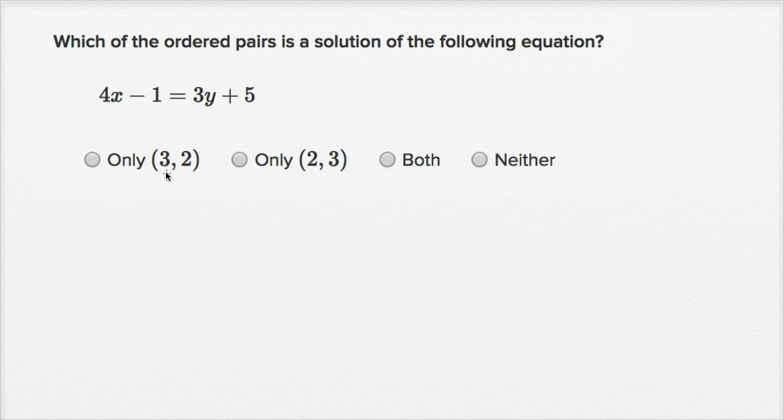When we look at an ordered pair and want to figure out whether it's a solution, we just have to remind ourselves that in these ordered pairs, the convention, the standard is that the first coordinate is the x coordinate and the second coordinate is the y coordinate.